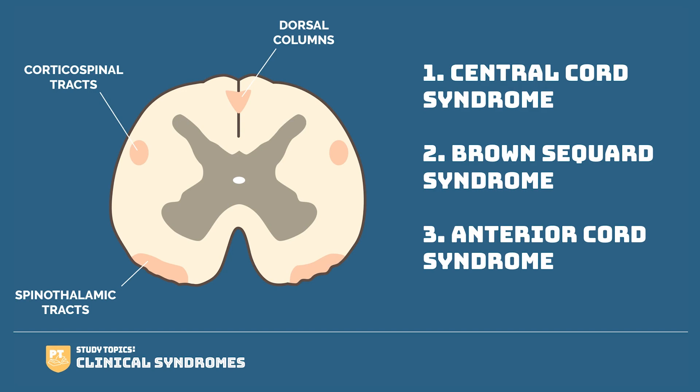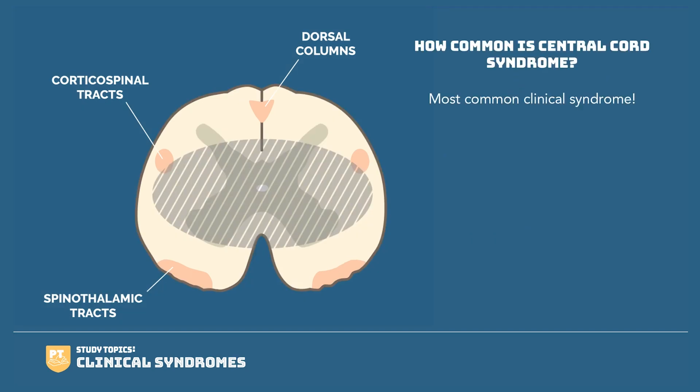First let's take a look at central cord syndrome. Central cord syndrome is the most common clinical syndrome and can be very disabling. This is a great exam question, so be aware of these hallmark information pieces. The mechanism of injury is hyperextension — a hyperextension injury in the neck is the classic mechanism. We often see it in a vignette like an elderly patient who fell, hit their chin, and caused an extension injury of the neck.